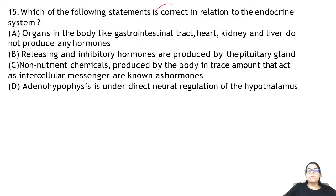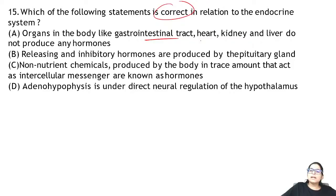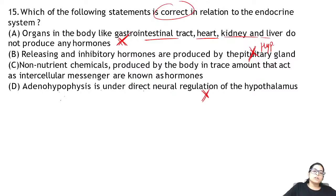Zoology Question 15: which is correct in relation to the endocrine system? The GI tract, heart, and kidney do produce hormones. Releasing and inhibitory hormones come from the hypothalamus, not the pituitary. The adenohypophysis is NOT under direct neural regulation — it is the neurohypophysis that is. Answer is C.